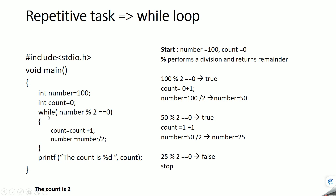Now number is 25: 25 % 2 gives remainder 1. Our condition checks if remainder == 0, so 1 == 0 is false. The condition has become false, so the control comes out of the loop and the print statement executes. Count is 2, so that gets printed.